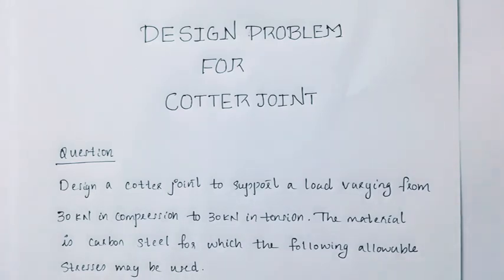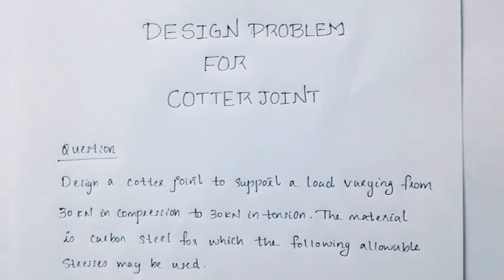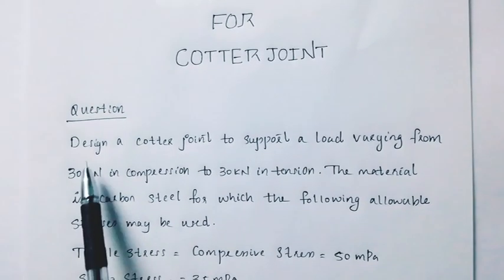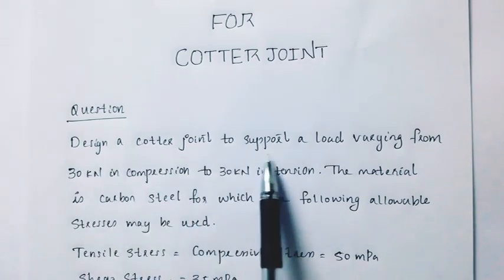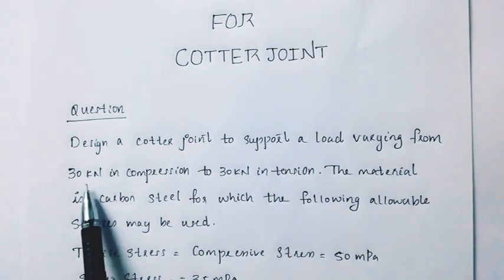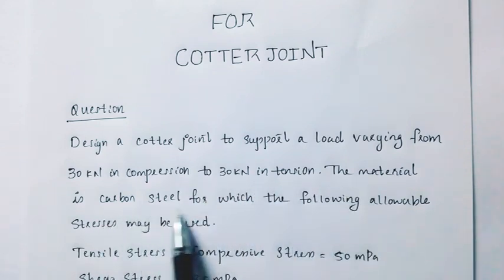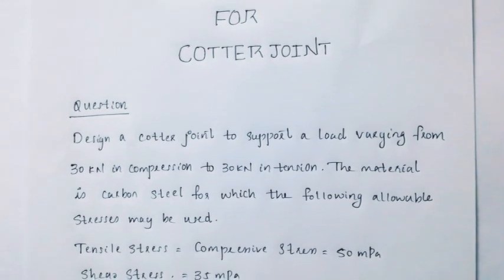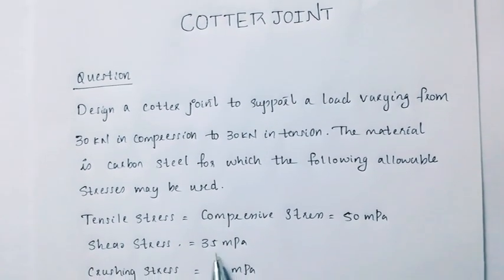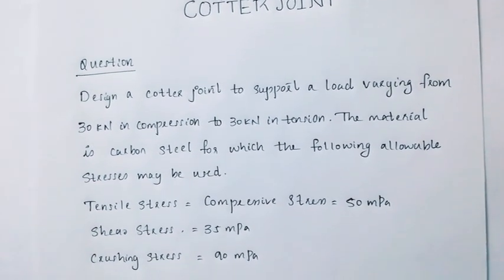We are going to design a cotter joint to support a load varying from 30 kN in compression to 30 kN in tension. The material is carbon steel for which the following allowable stresses may be used: tensile stress is 50 MPa, shear stress is 35 MPa, and crushing stress is 90 MPa.